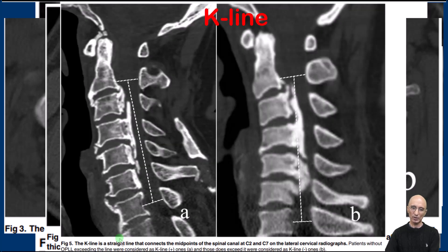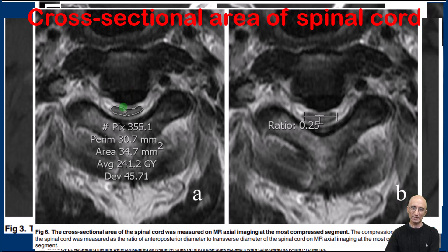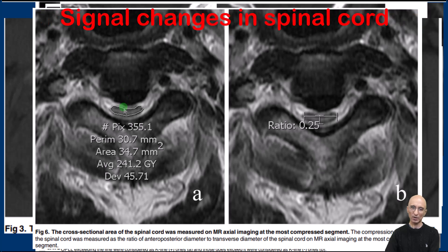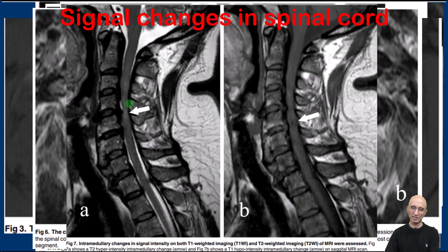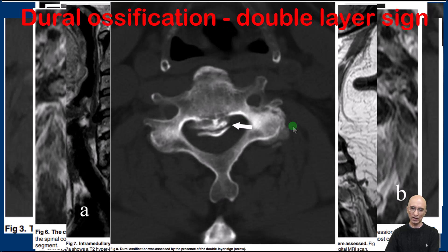They also looked at whether the OPLL was anterior or posterior to the K line, which was drawn by connecting the midpoints of the spinal canal at C2 to C7 levels. They also assessed the cross-sectional area of the spinal cord and assessed for signal changes in the spinal cord on T1 and T2 images — specifically if it was hyperintense on T2 and hypointense on T1. They also assessed for dural ossification, i.e., the double layer sign.